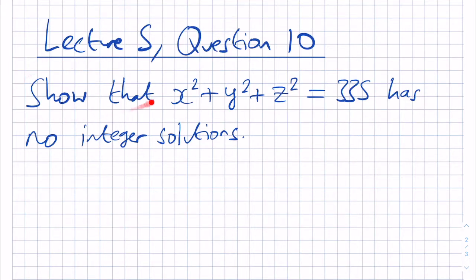The question says, show that the equation x squared plus y squared plus z squared equals 335 has no integer solutions.